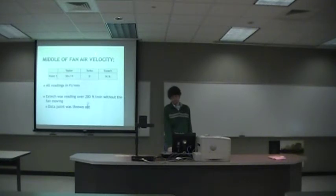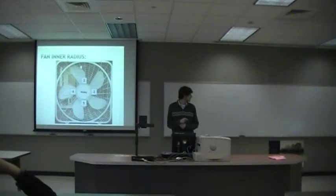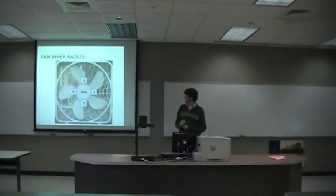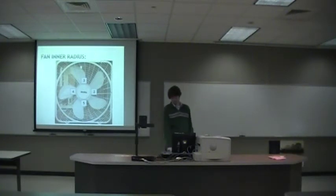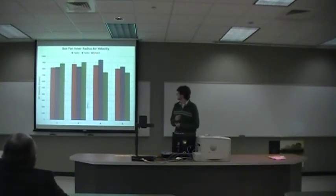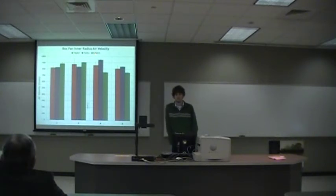After determining the air velocity in the middle of the fan, we looked at the inner radius of the fan. We took readings at four different spots around the inner radius, labeled 2, 3, 4, and 5. As expected, the velocity at each point was about the same since they were all the same distance from the middle — they were all in the 800 feet per minute range on all the devices.